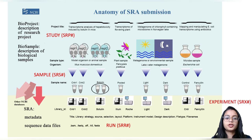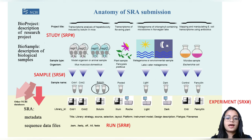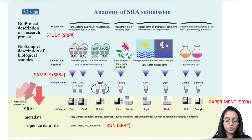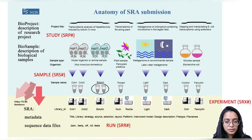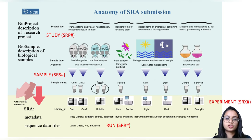We can find information about the project, which is equivalent to the study, where we have a description of the research project. These have accessions starting with SRP. We can also find information about the samples, which are extracted or which fall under the study. Each of these individual projects also describes a bit about the samples and what organisms they are coming from, and these records start with accessions starting with SRS.